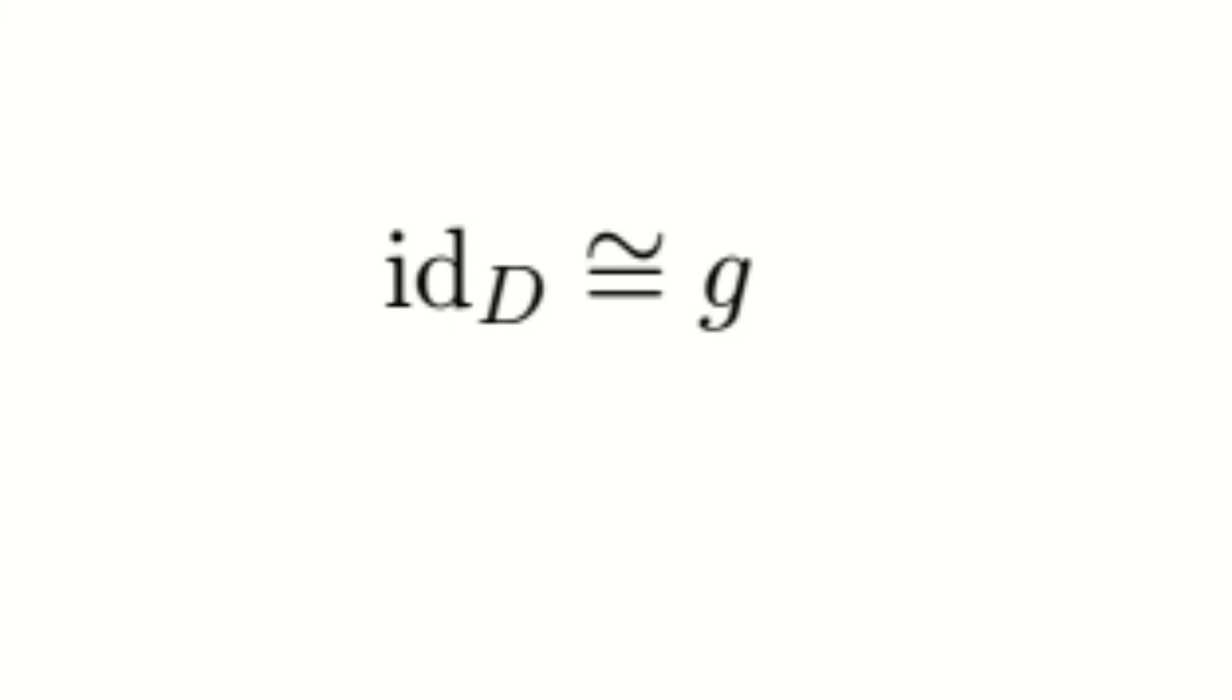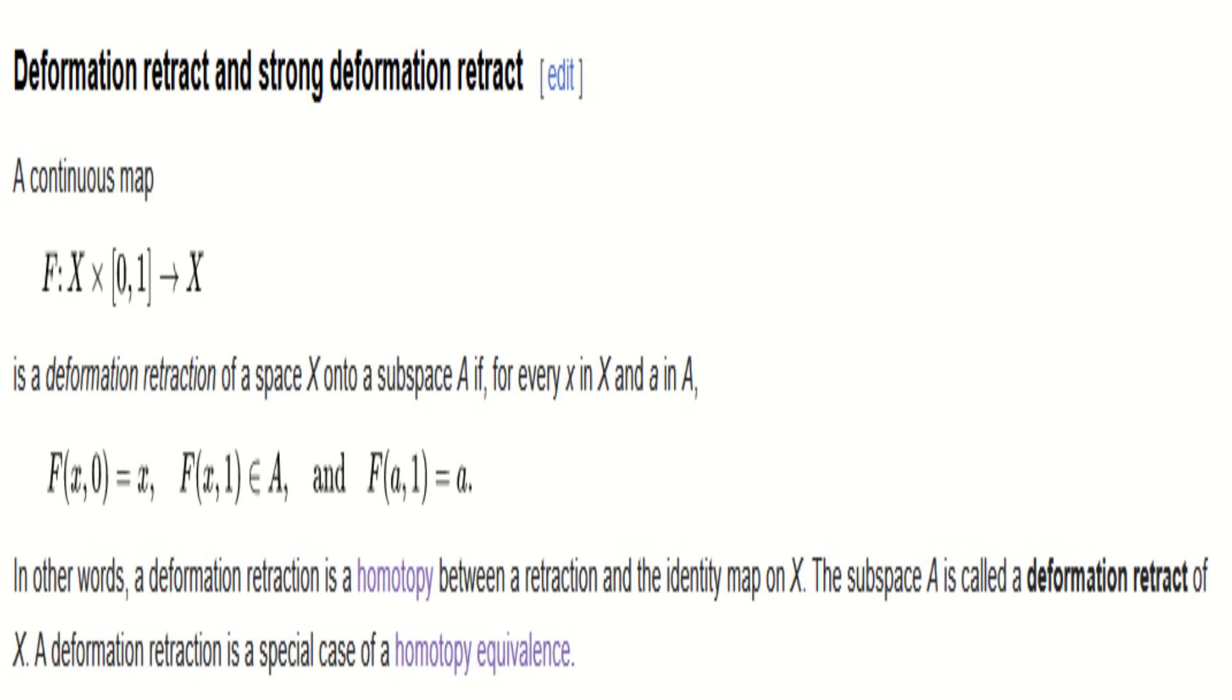That means that, homotopically, doing nothing to the disk is the same thing as doing g. This specific collection of continuous functions actually has a special name. It's called a deformation retract. This means that the identity is homotopic to a map that keeps a subspace fixed. In this case, our fixed subspace is the circle.